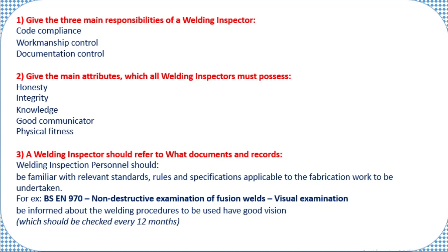Third: what documented records should a welding inspector refer to? Welding inspector personnel should be familiar with the relevant standard being followed for the particular WPS. They should also know rules and specifications, as every client and every company may have different specifications in addition to the standard — and those must be followed too. For example, BS EN 970 covers non-destructive examination of fusion welds — visual examination. If following ASME Section 9, you should know the welding and brazing qualifications requirements.